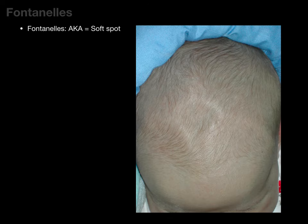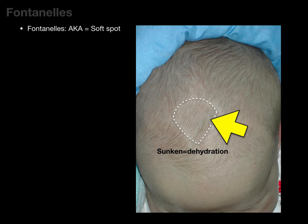Fontanelles are also known as the soft spot. When you look at the top of a newborn, there is that soft spot. These fontanelles — especially the anterior fontanelle — can be a window into the health status of a newborn. For example, if the soft spot is sunken, it may be indicative of dehydration. If there's bulging from the soft spot, it may be indicative of an increase in intracranial pressure, like hydrocephaly.